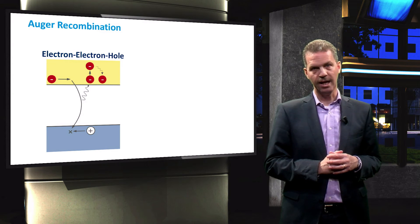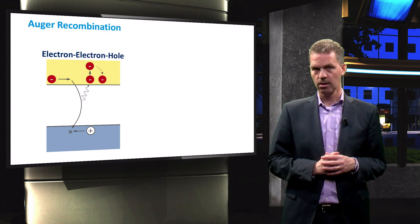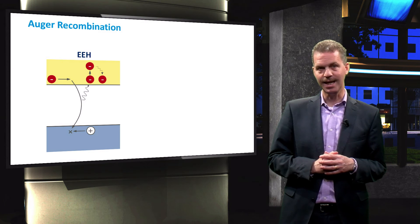When the third particle is an electron, it is an electron-electron-hole process, which will be abbreviated as EEH.